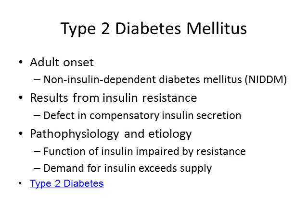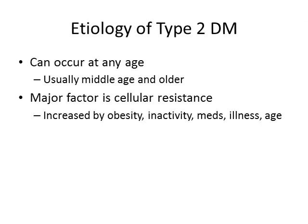Type 2 can occur at any age but is usually middle-aged to older, though we are seeing it younger and younger. It may also develop secondary to medications — for example, if a patient has an organ transplant and needs an immunosuppressant or steroid, that steroid can drive up blood sugars and may precipitate Type 2 diabetes.